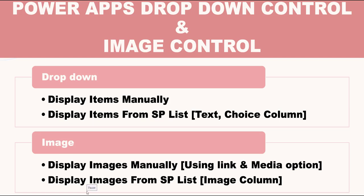Here I will cover two important and interesting controls: the PowerApps dropdown control and the PowerApps image control. The dropdown control allows users to select only one option from a list of predefined options. I will show how to display items manually in the dropdown control, as well as from a SharePoint list text column and choice column.